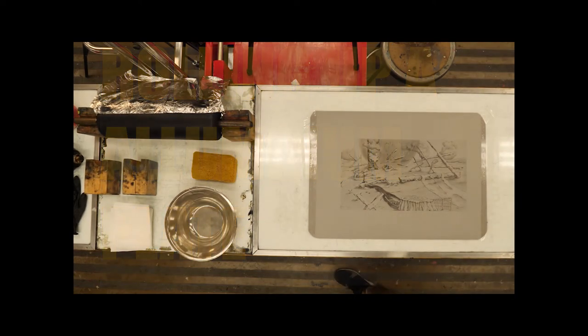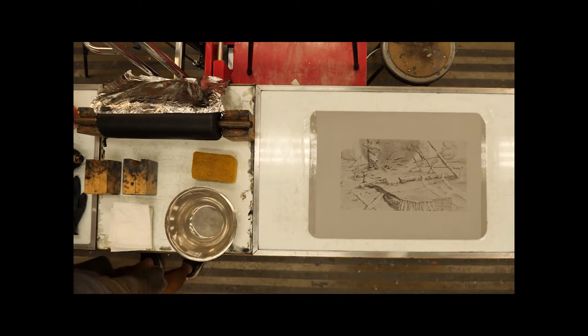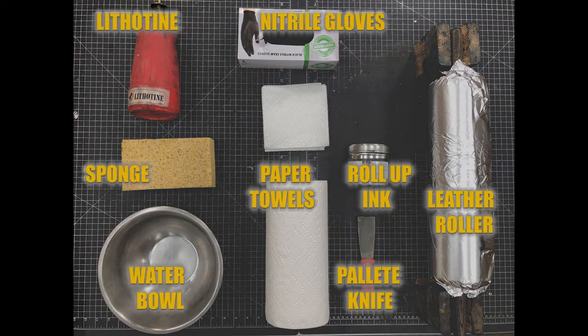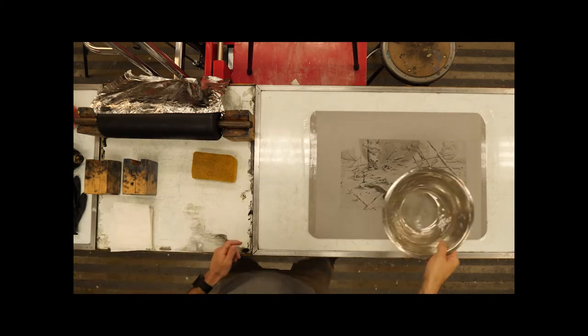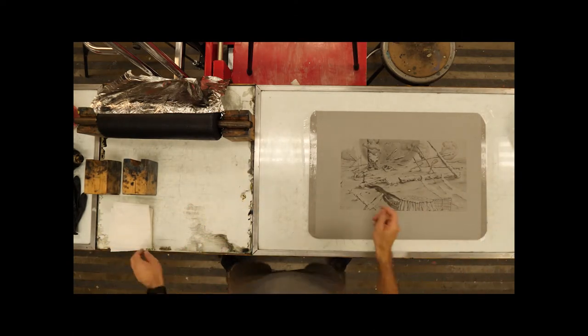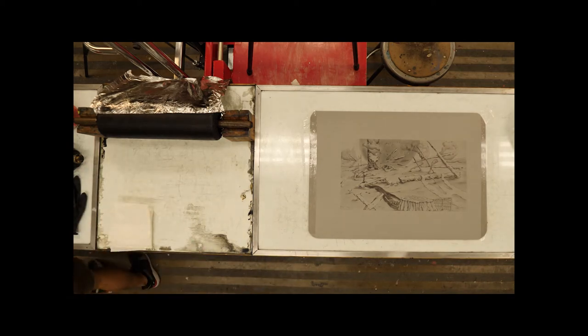Alright, we're going through the roll up in the second etch now, so we've already completed our first etch and now we're prepping for the roll up in the second edge. Here's some of the materials that we're going to be needing.